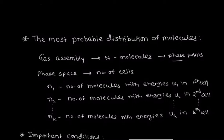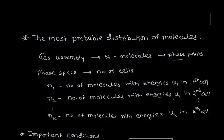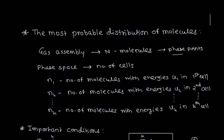These N molecules are distributed in phase space, hence those molecules we call phase points. If phase space is divided into a number of cells numbered 1, 2, 3 up to the kth cell, in each and every cell we consider n1 as the number of molecules with energy u1 in the first cell, n2 with energy u2 in the second cell, and similarly up to nk molecules with energy uk in the kth cell.